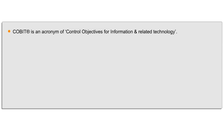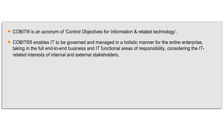COBIT is an acronym for Control Objectives for Information and Related Technology. COBIT 5 provides a comprehensive framework that assists enterprises in achieving their objectives for the governance and management of enterprise IT. Simply stated, it helps enterprises to create optimal value from IT by maintaining a balance between realizing benefits and optimizing risk levels and resource use. COBIT 5 enables IT to be governed and managed in a holistic manner for the entire enterprise, taking in full end-to-end business and IT functional areas of responsibility.